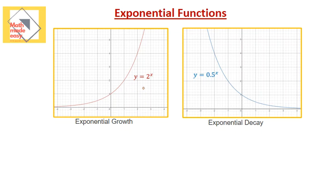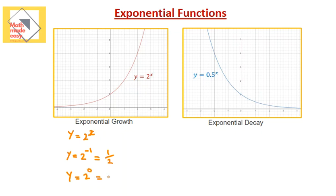What do we mean by that? The function which represents exponential growth has the values of y equal 2 to the power of x. In the exponential function, the exponent x is the variable, or is the unknown. If I want to see the values of y with different values of x, I'm just going to substitute. If I substitute for x equal negative 1, then y equals 2 to the power of negative 1, which is going to be 1 over 2. If I substitute for x equal 0, my answer is going to be 1. If I substitute for x equal 1, my answer is going to be 2. If I substitute for x equal 2, my answer is going to be 4. And if I substitute for x equal 3, your answer is going to be 8.